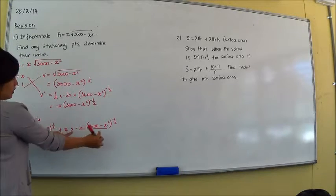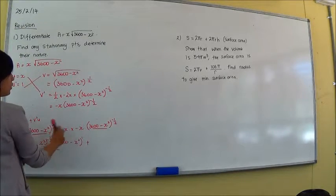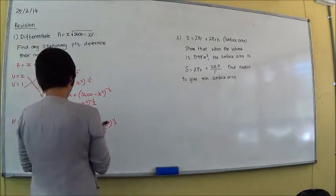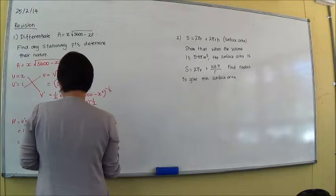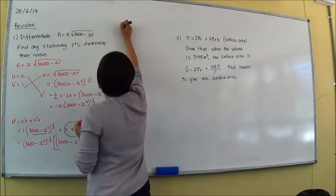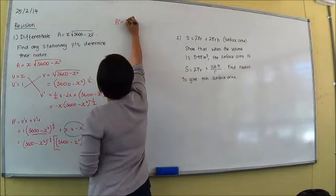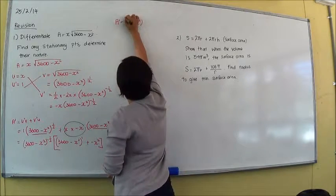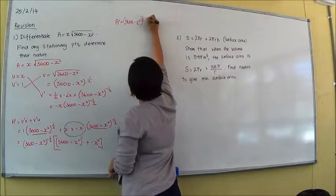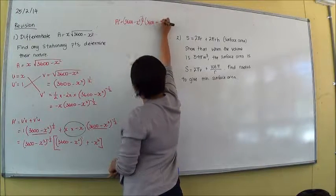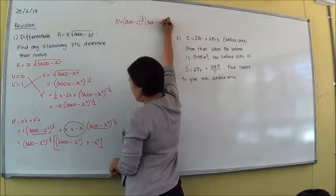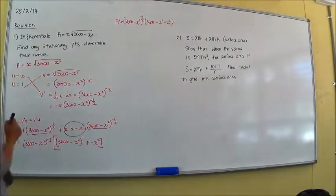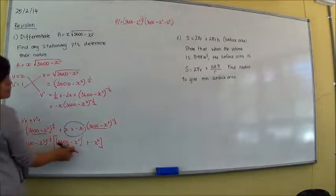And since that's that section there, we leave it and we only have to multiply this part here. So that's plus negative x squared. So now we have A dash equals 3,600 minus x squared to the power of negative a half, brackets, 3,600 minus x squared minus x squared. Well, basically to the power of 1 means it's the same thing.